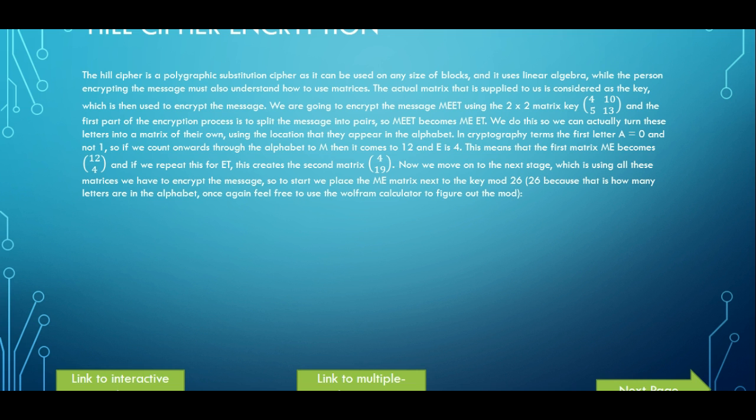The message. So let's say we have the message MEET and our key, our matrix key, is 4, 10, 5, and 13. That's our 2 by 2 matrix key. The first part of the encryption process is to split the message into pairs. So MEET we split into pairs: we have ME and ET. The next stage then is to